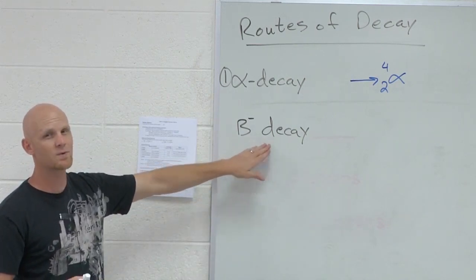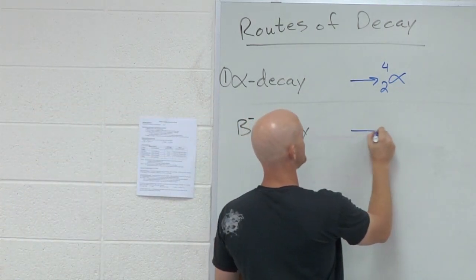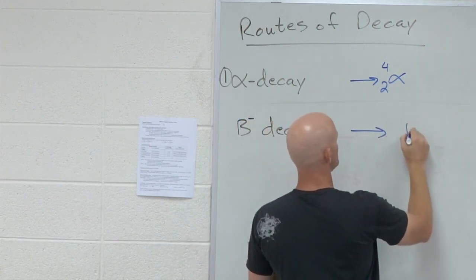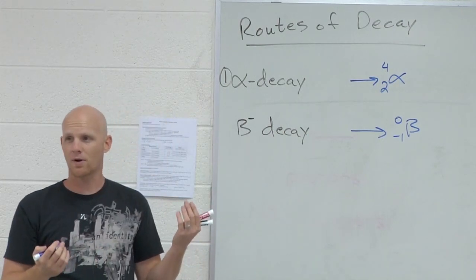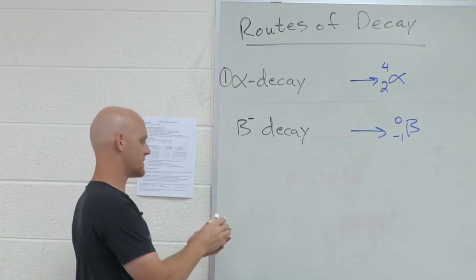If we just say beta decay, we're talking about electron emission. In this case, being electron emission, emission means it's a product being emitted, and you'll have to have a beta particle or electron, same diff, on the other side.